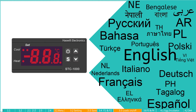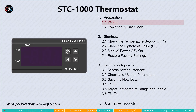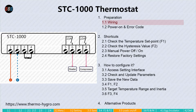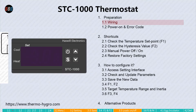The STC-1000 thermostat is essentially a power switch with a temperature sensor. It provides two outputs: one for heating and the other for cooling. Before we start, complete the wiring as you see on the screen. If desired, you can wire a single load instead of two.